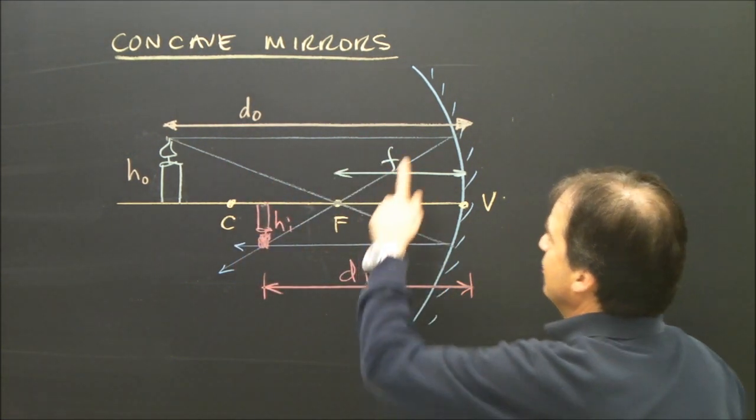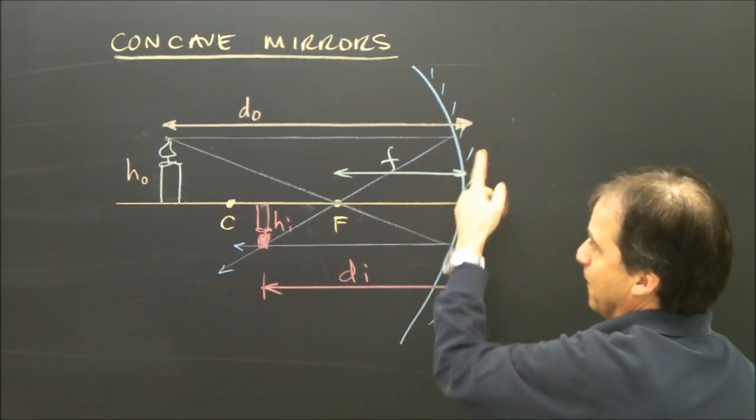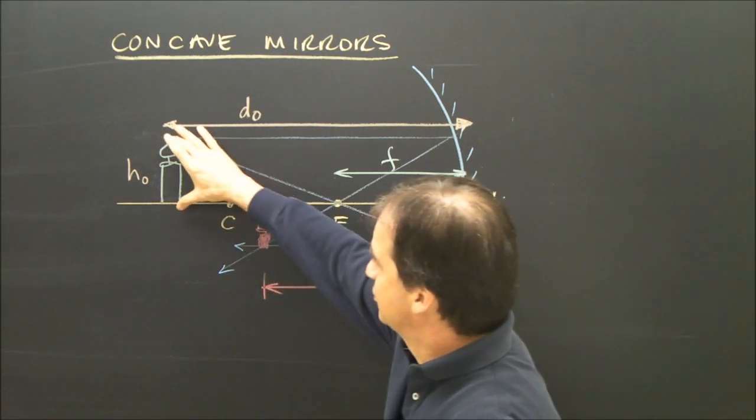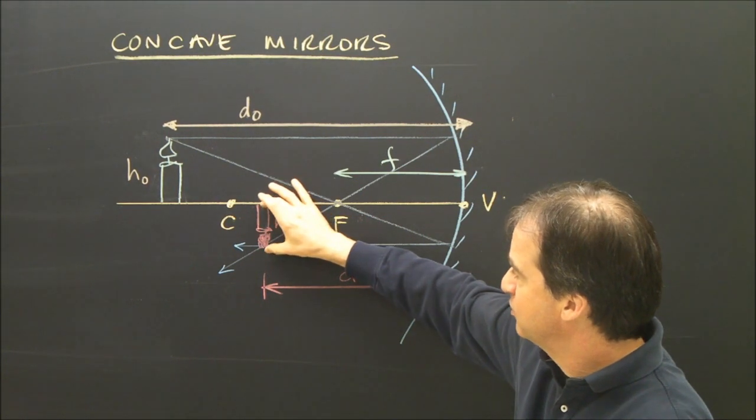So the important variables are the distance to the object. That's the distance from this part of the mirror to where my original object was. Height of the object is just the height of that. I've got height of the image. Well, that's the image. That's the height there.